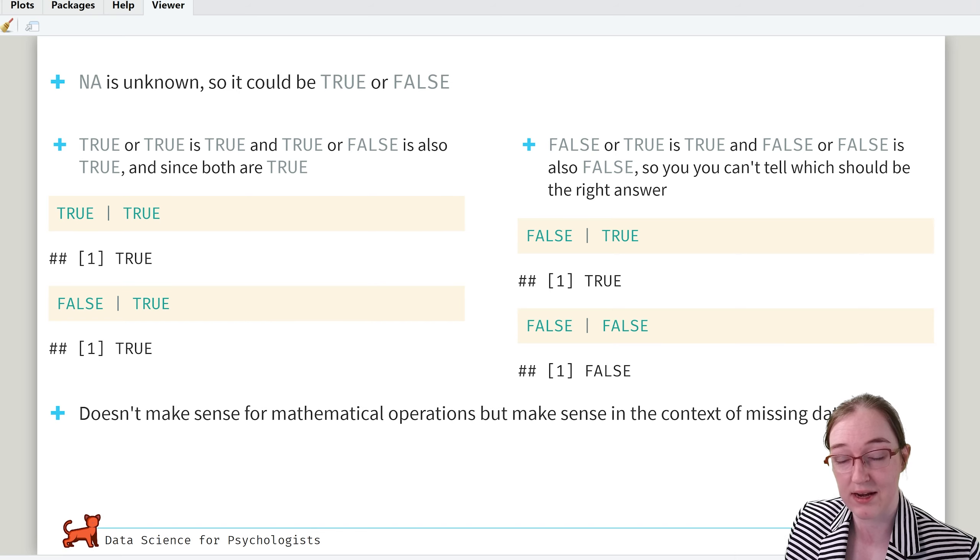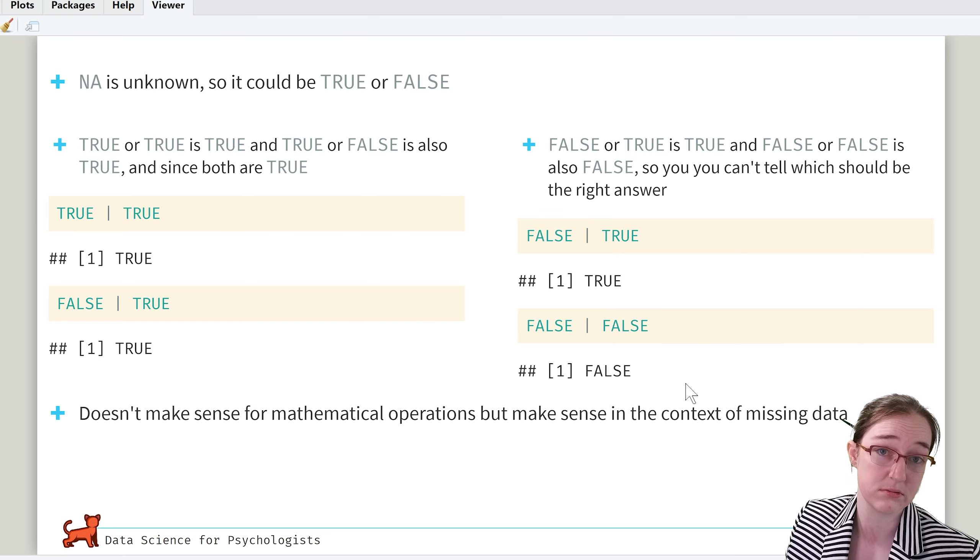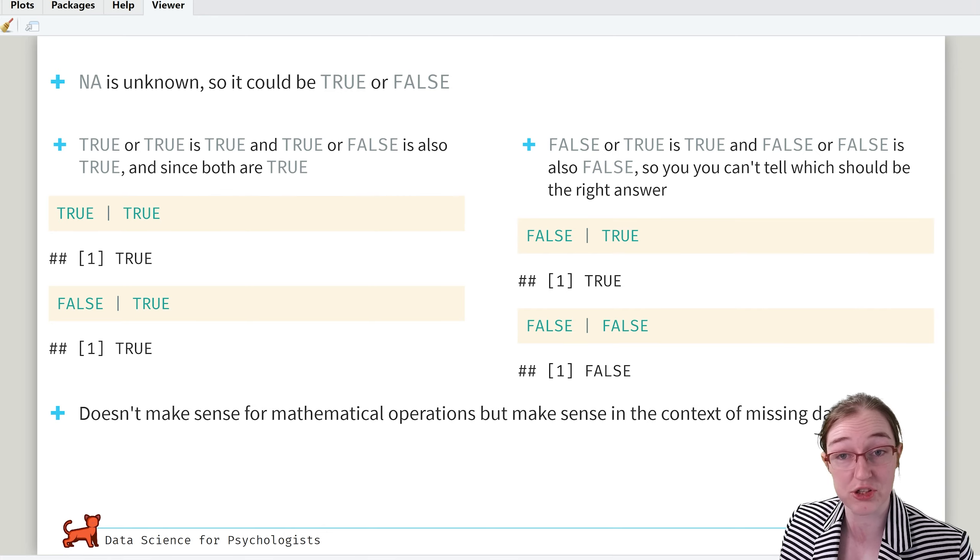But now let's try this where we have FALSE or TRUE. So we have TRUE for FALSE or TRUE. But then we have FALSE or FALSE, which gives us FALSE. And we essentially are given both TRUE and FALSE at the same time simultaneously. So it can't tell what should be the right answer because it has both. So it spits out NA.